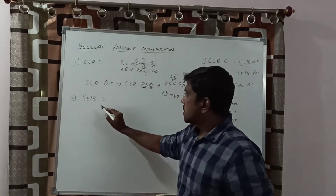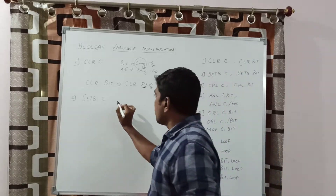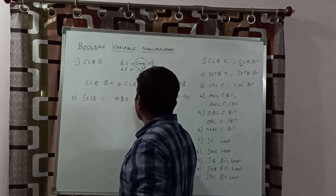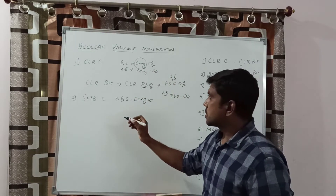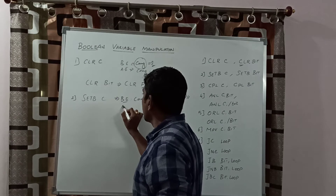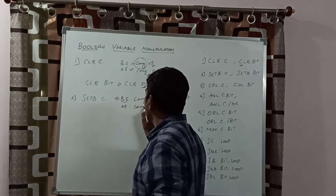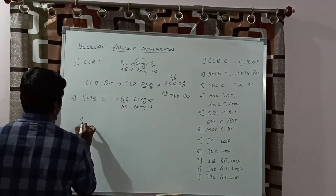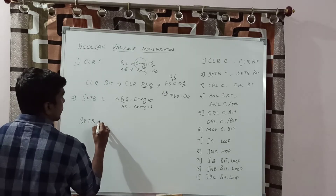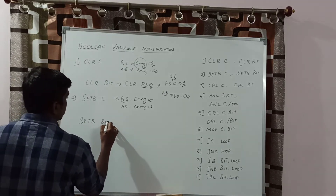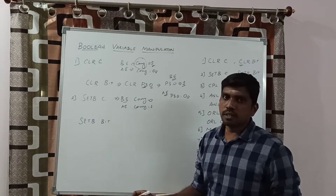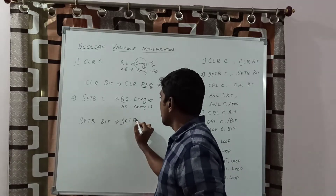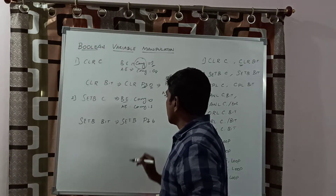The SETB instruction sets the carry value. Before execution, the carry bit equals 0. After execution, the carry bit is set to 1. The alternate instruction is SETB bit, giving one more possibility for the setting instruction. For example, you can rewrite it as SETB P3.6.